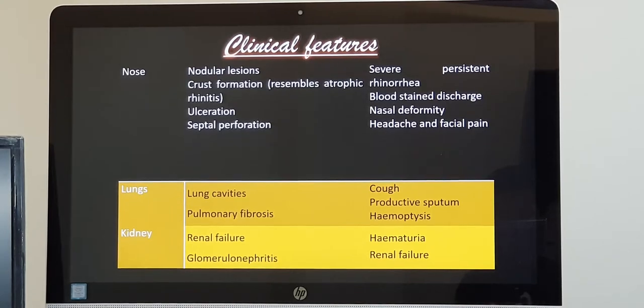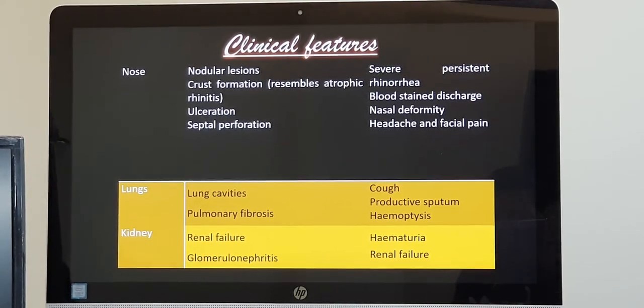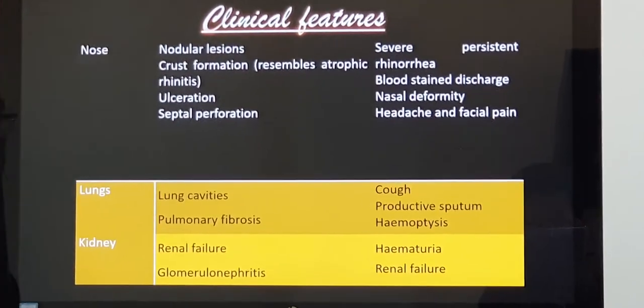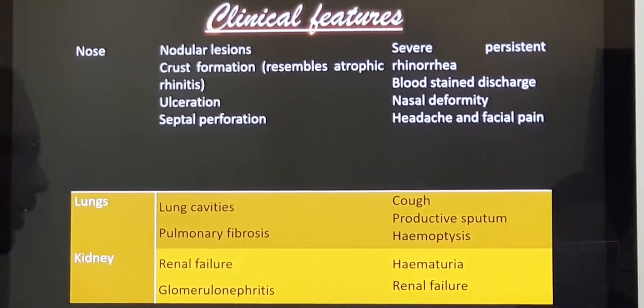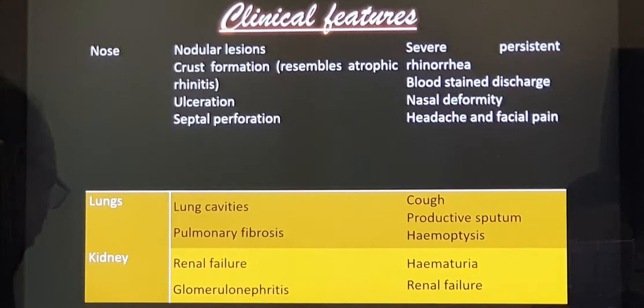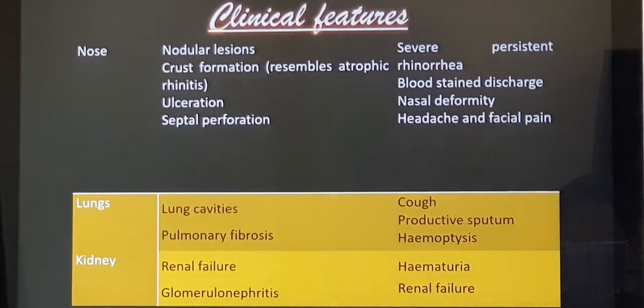And the kidney, same pathology continues. It starts with you have blood in the urine and slowly as and when the disease progresses it results in renal failure. So these are the main organs which are involved.